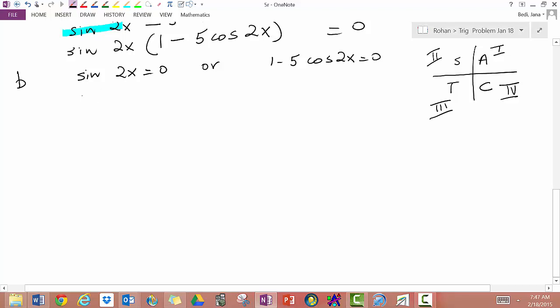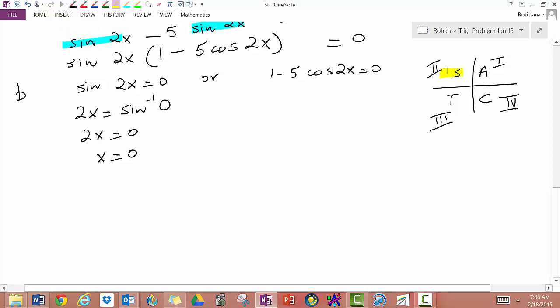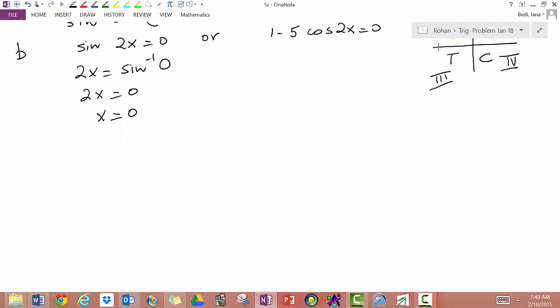So sine of 2x equals 0 you say 2x equals sin inverse 0. You do that on your calculator and you will get 2x equals 0 which means x equals 0. This is your solution in the first quadrant. Now sine is also positive in quadrant 2. And if x is the reference angle then you get 180 minus x equals 0.